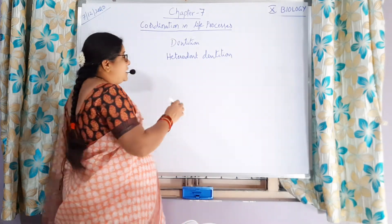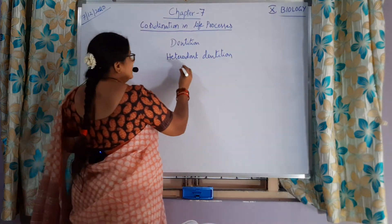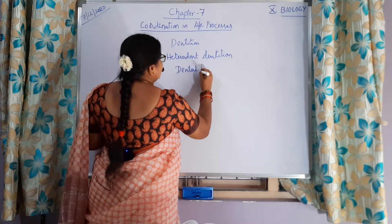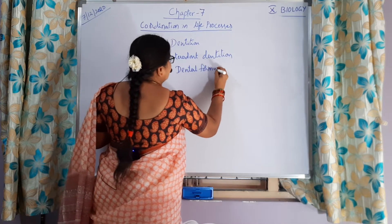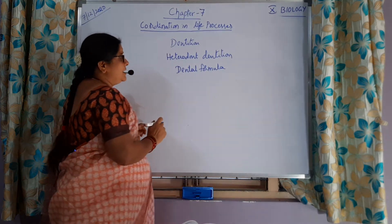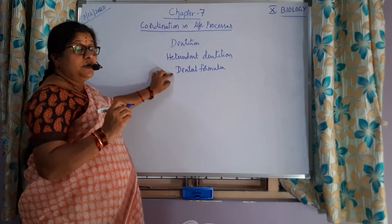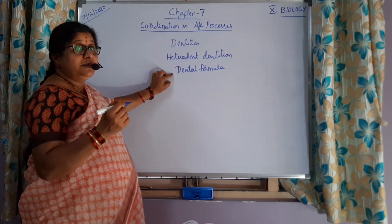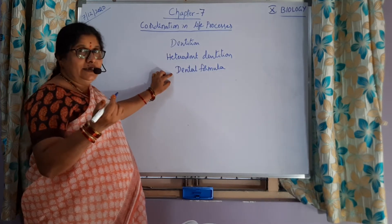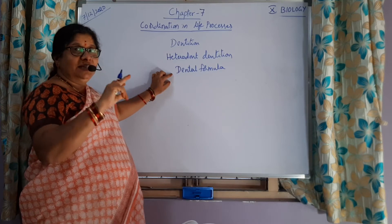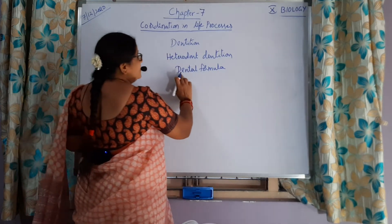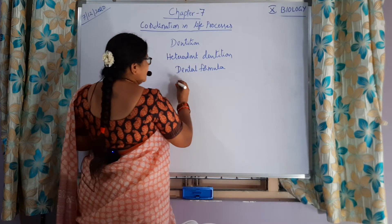So what is the dental formula? It tells us how many types of teeth there are and how they are arranged in the jaws. That arrangement of all tooth types can be known with the help of the dental formula.